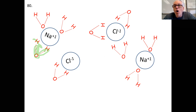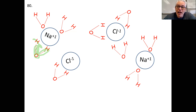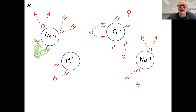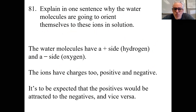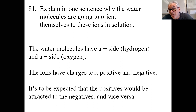The oxygen sides of water are more negative because oxygen has a higher electronegativity value, so the negative oxygen sides of water tend to orient themselves towards the sodium cations. The hydrogen sides of water, which have lower electronegativity values and are more positive, are more oriented towards the chlorides. In one sentence: the water molecules have a positive side (hydrogen) and a negative side (oxygen) because of electronegativity difference. The ions are also charged positive and negative, so it's normal and expected that positives attract negatives.